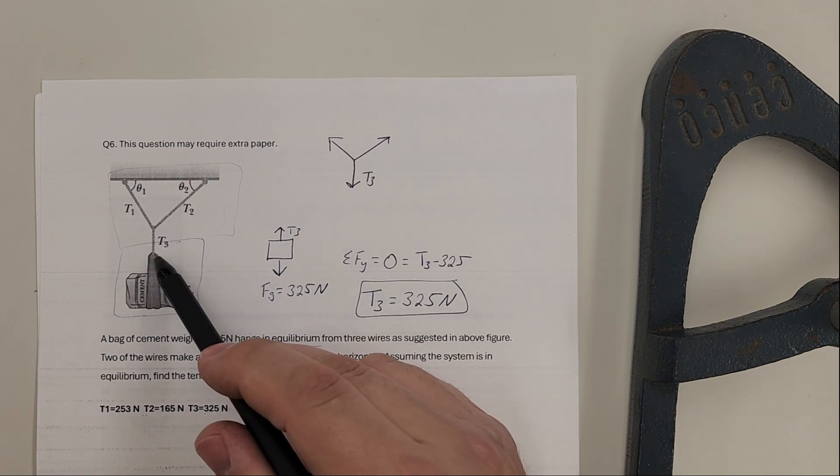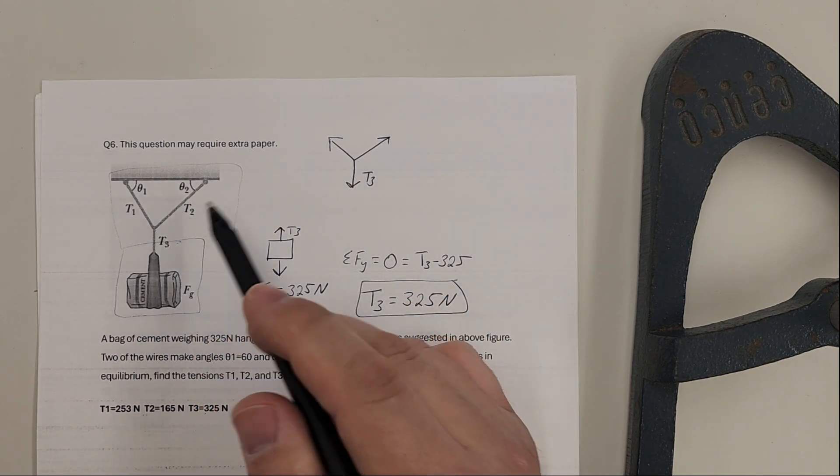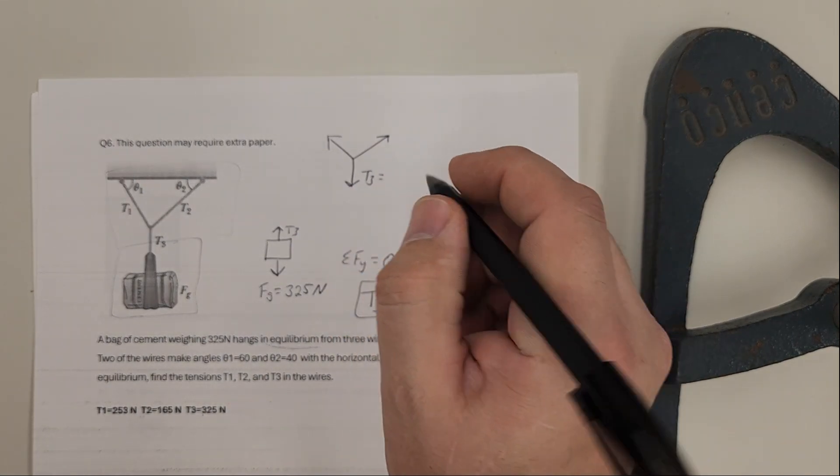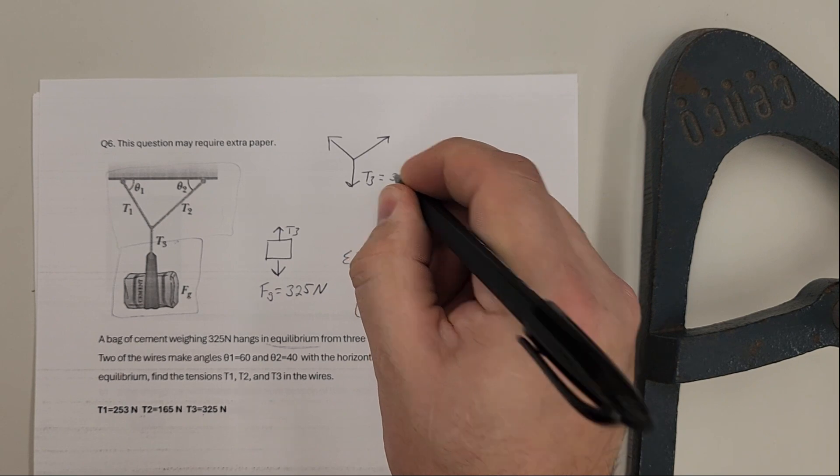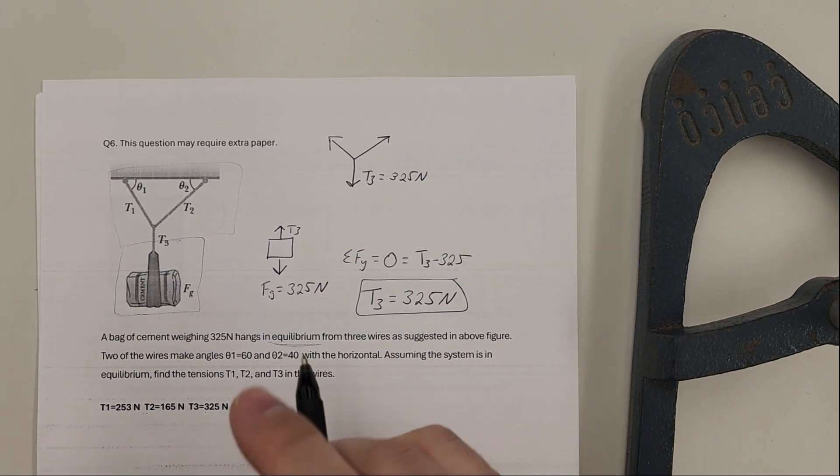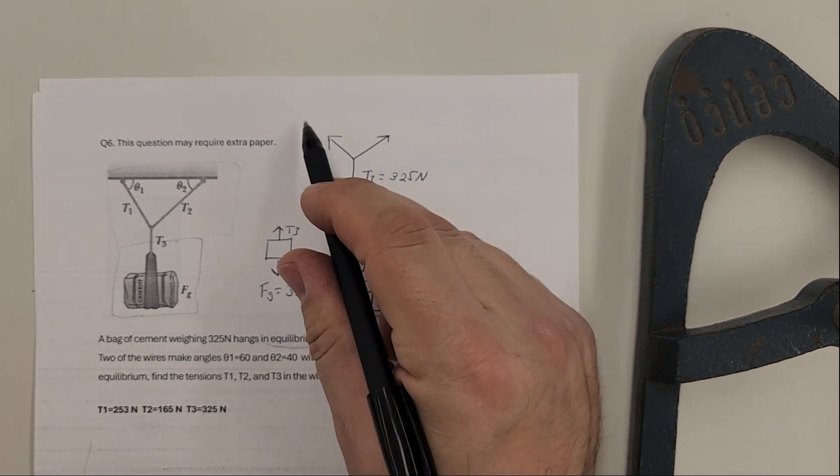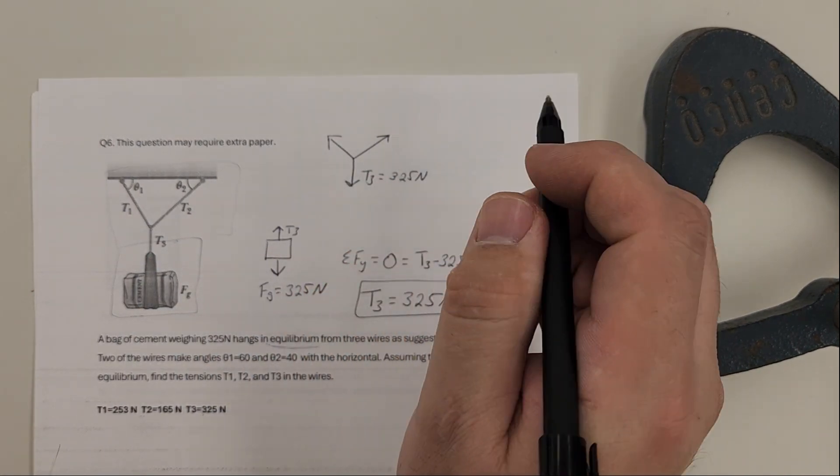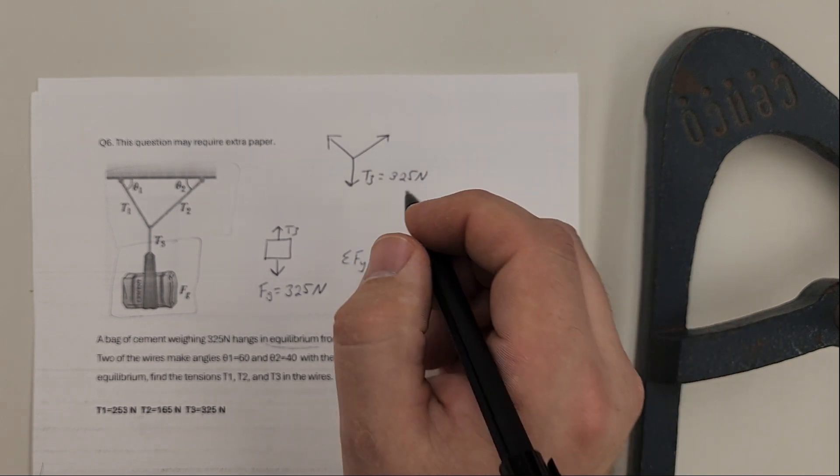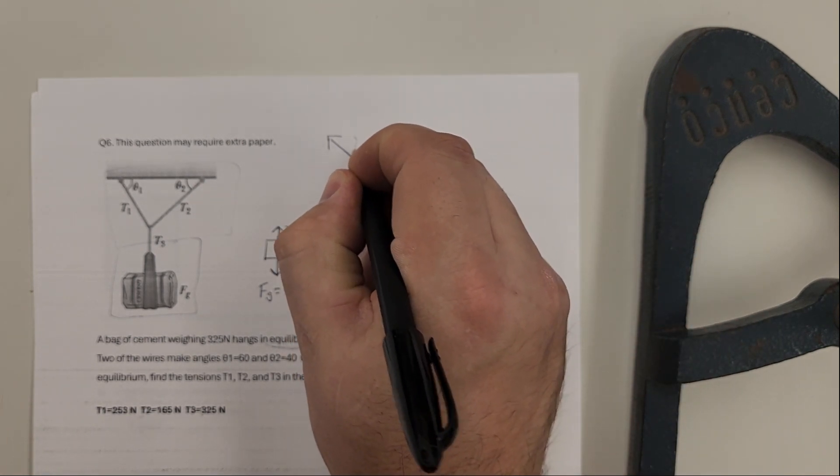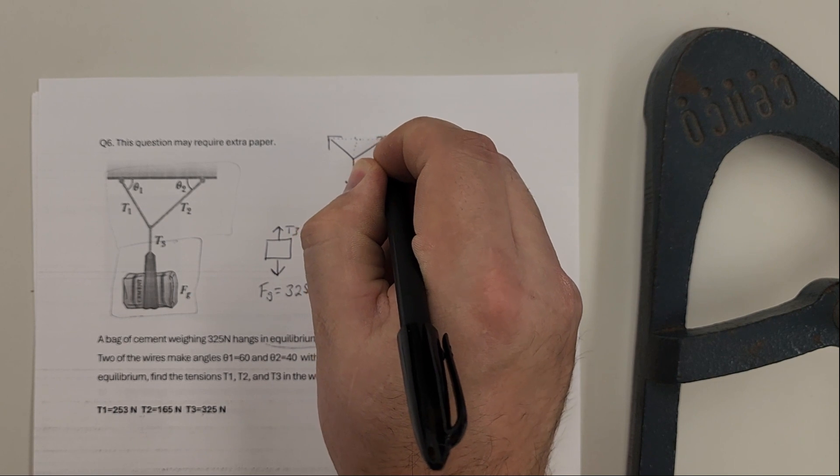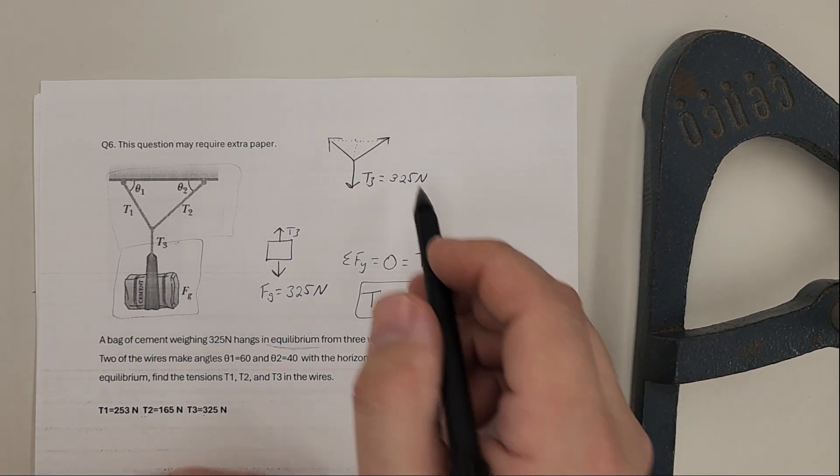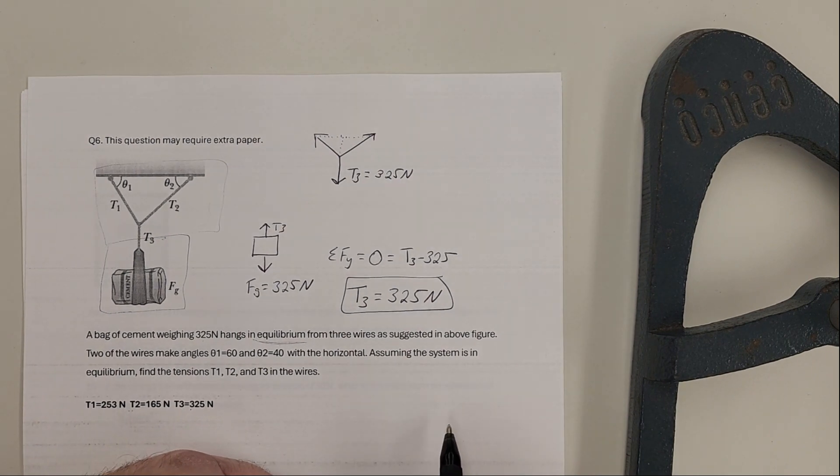We have an upward pull from here, we must have a downward pull from here in order to cancel out. So T3, we know that to be 325 newtons. Then we have this T1 and T2 at angles. Forces at angles, just like any other vector, we need to break them up into x and y components, and we'll need to add those into our equations.